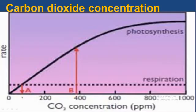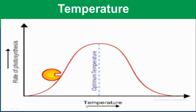As temperature increases, the rate of photosynthesis increases and reaches a constant rate. However, increasing temperature beyond the optimum results in denaturation of enzymes, and therefore results in a decreasing rate of photosynthesis.